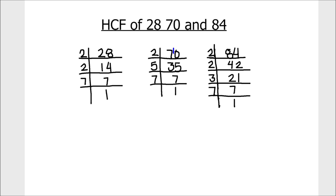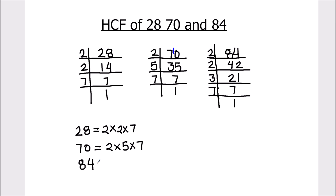So all the numbers are now fully divided. Let's write the factors of all the numbers. So 28 is 2 × 2 × 7. The factors of 70 are 2 × 5 × 7, and the factors of 84 are 2 × 2 × 3 × 7. We have written the factors of all the numbers.